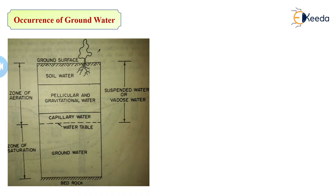If you remember in Chapter 3, water requirements of a crop, we had seen the soil moisture irrigation relationship. In this diagram the picture is quite similar — there is a ground surface, a plant, and the roots penetrating into the soil. The depth up to which roots penetrate is known as the soil water zone or root zone depth, and the water extracted by plant roots for nourishment is known as soil water.